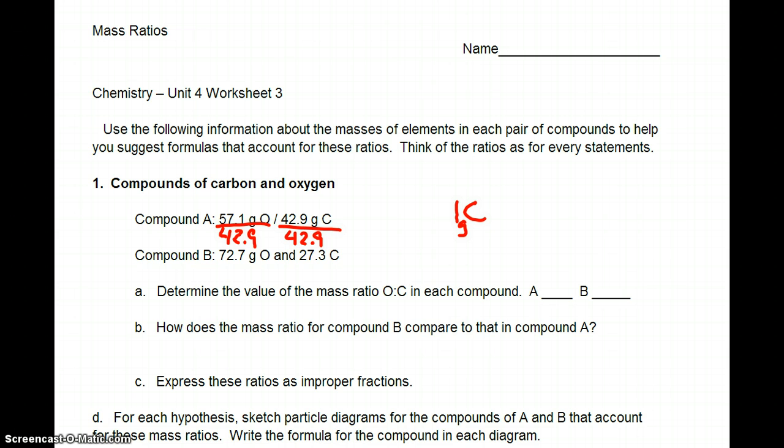For every 57.1 divided by 42.9, that's 1.33 grams of O. And I could have also done this as a for every statement. So I could say for every 57.1 grams of oxygen, there is 42.9 grams of carbon.